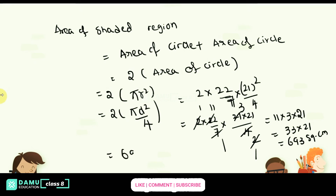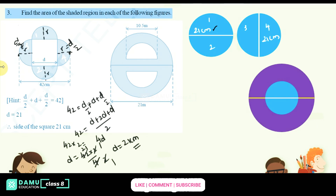The answer is 693 square centimeters. For the second figure, the dimension from corner to corner is given as 21 meters — so the bigger circle's diameter is 21 meters. The smaller circle's diameter is given as 10.5 meters.